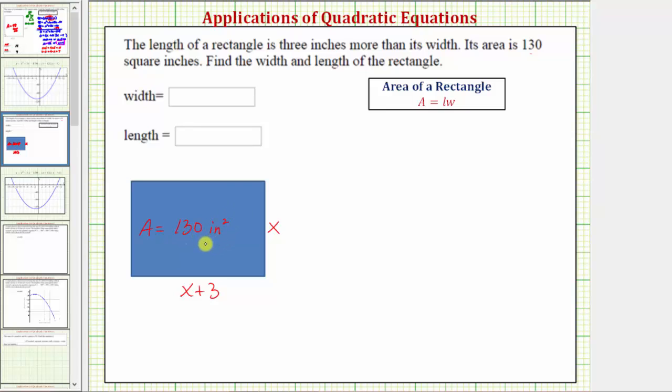And now using the area formula for a rectangle, we can set up an equation and solve for x, then determine the length and the width. The area of a rectangle is equal to length times width.